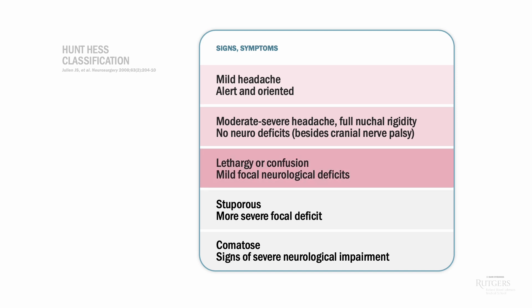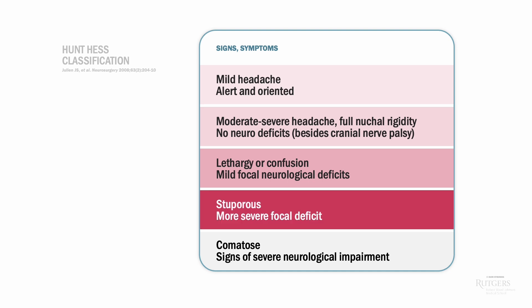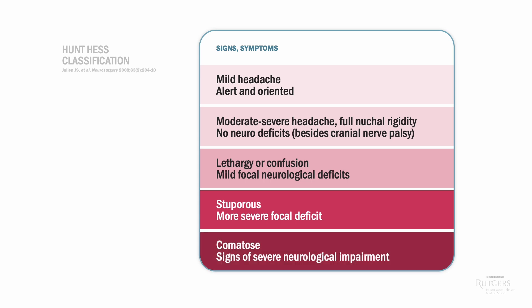Hunt and Hess III is a lethargic, confused patient who is showing mild focal neurological deficits. If that patient becomes more stuporous and difficult to awaken, and the focal deficits become more severe, the score would be four. And the sickest patients — the patients with the highest mortality — are Hunt and Hess V. They're comatose and have signs of severe neurological impairment, like posturing.